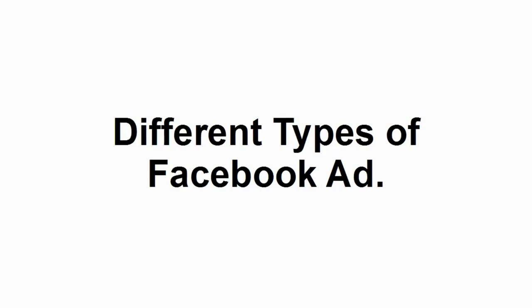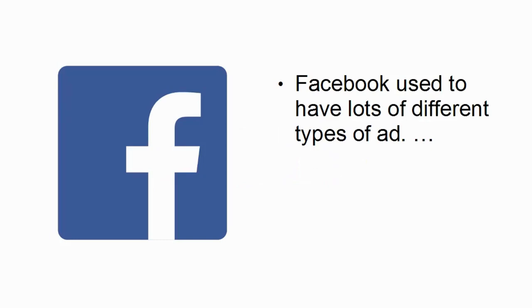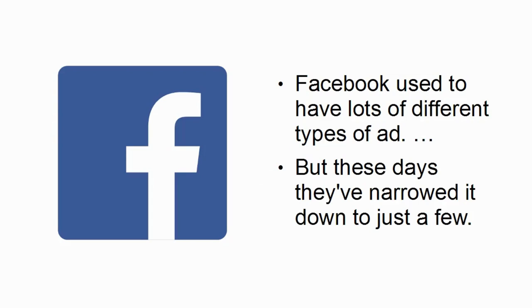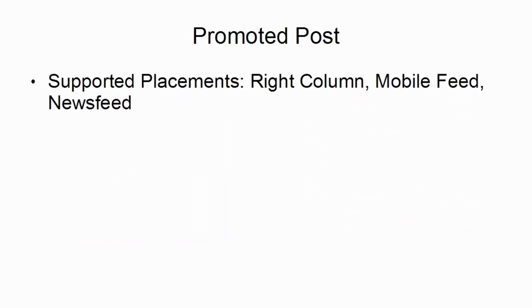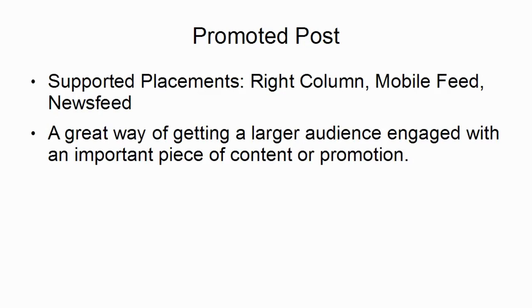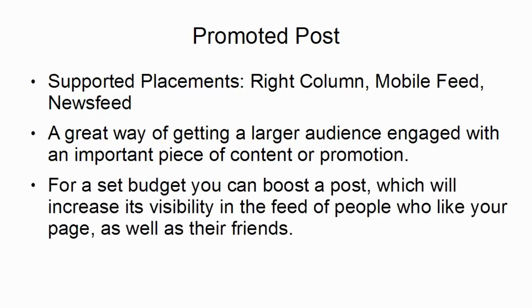In this video I want to talk you through some of the different types of Facebook ad. Facebook used to have lots of different types but these days they've narrowed it down to just a few — probably the most popular ones. The first one is a promoted post. The supported placements are the right column, the mobile feed, and the news feed. This is a great way of getting a larger audience engaged with an important piece of content or promotion. For a set budget you can boost a post, increasing its visibility in the feed of people who like your page as well as their friends.